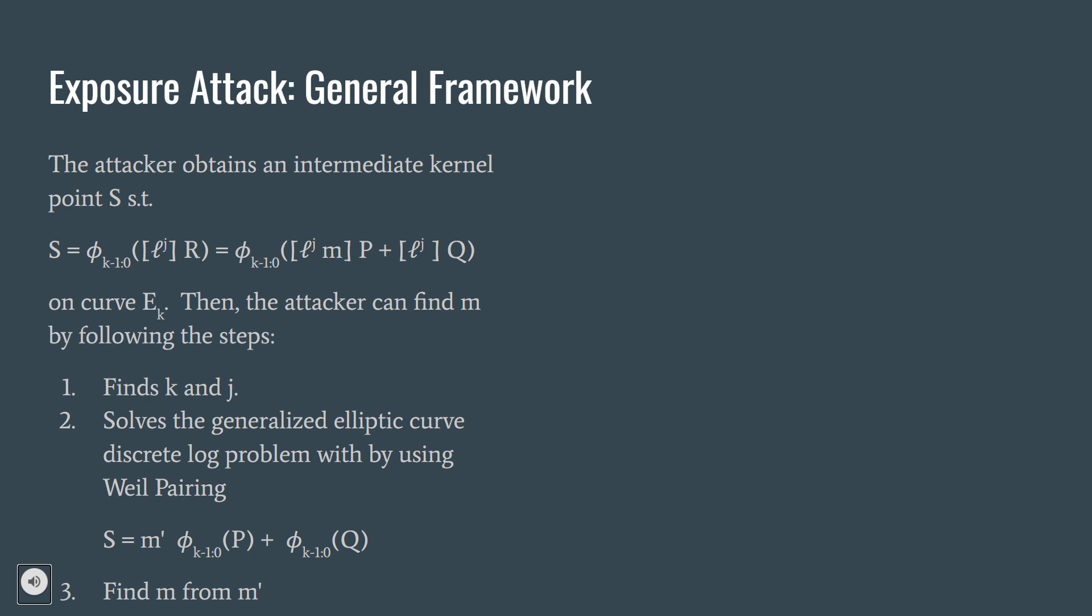He follows the three steps. The first step, he finds k and j, and therefore the isogeny chain phi from k minus 1 to 0. And then he solves the generalized elliptic curve discrete log problem, which is S equals m dash times phi of P plus phi of Q by using Weil pairing. And in the last step, he finds m from m dash.